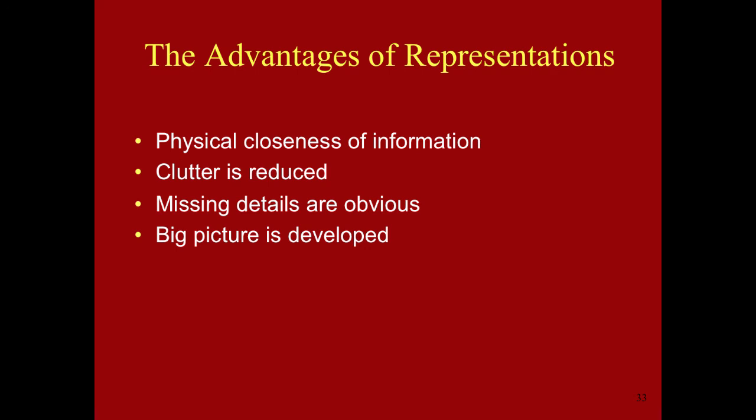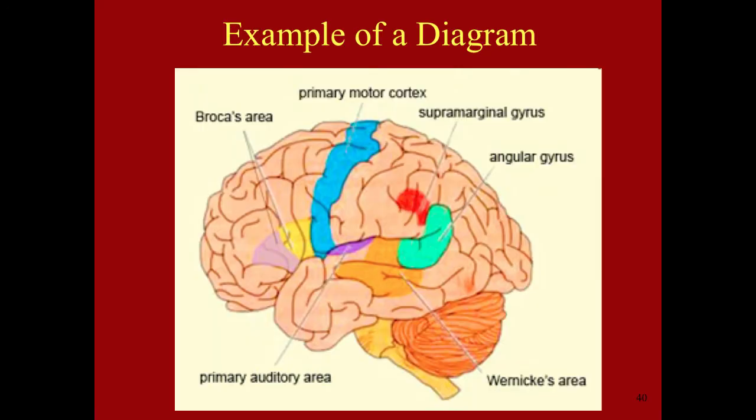The following slides provide examples of each type of representation. Here is a diagram of the parts of the brain that enable us to read. As you can see, it is much easier to learn from an image of these parts than to try to describe their locations using words.